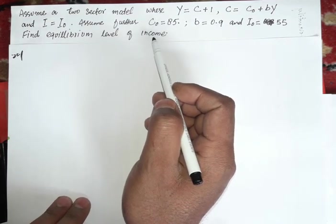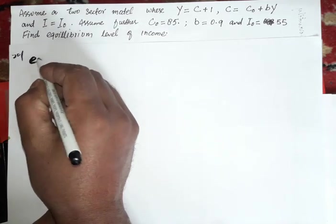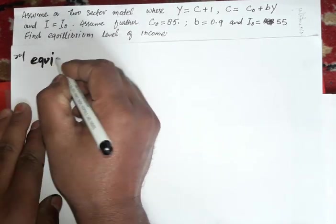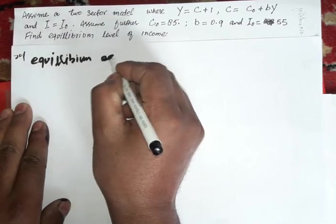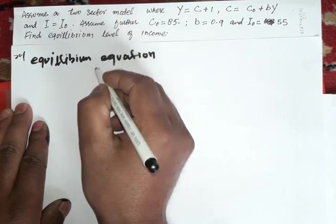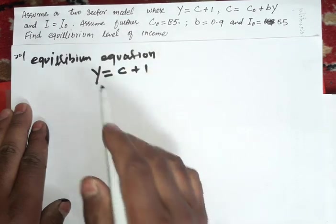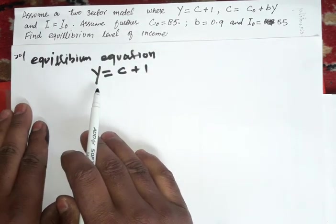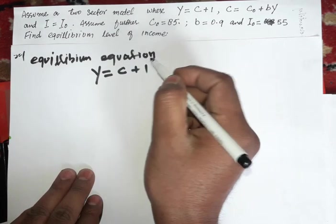We know that equilibrium equation is Y equals C plus I, that is, aggregate income equals aggregate consumption plus aggregate investment.